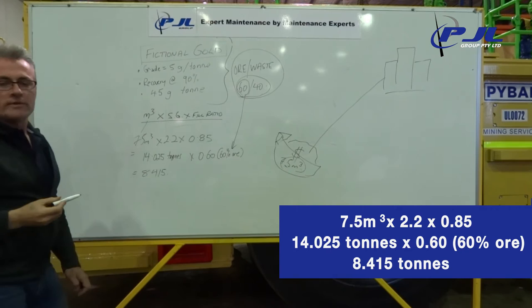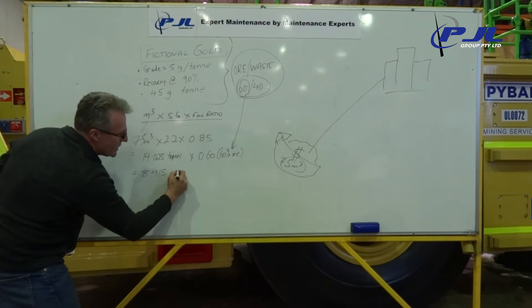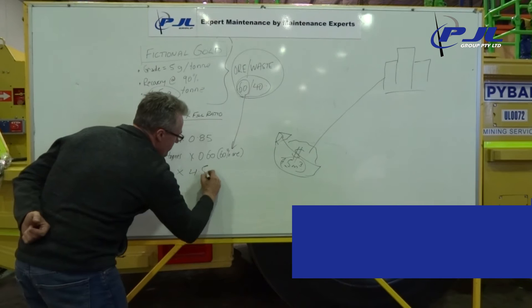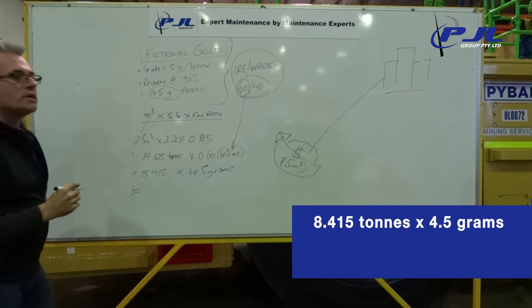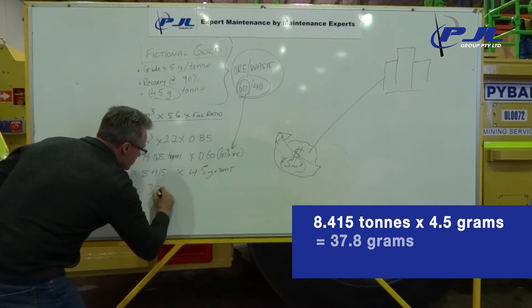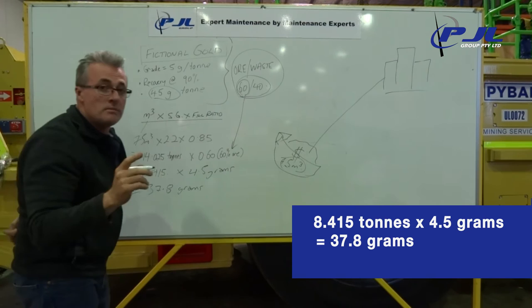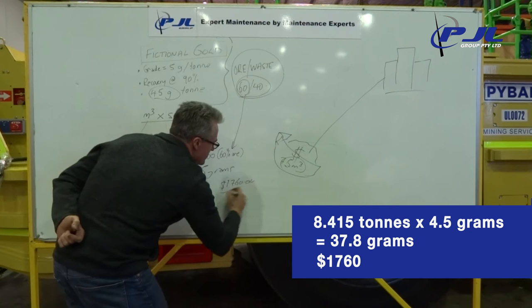What does that mean? So if we've got 8.415 tonnes, multiply this by how many grams per tonne, 4.5 grams. That's going to equal roughly an ounce, 37.8 grams. So every bucket I did in this mine is worth $1,760.